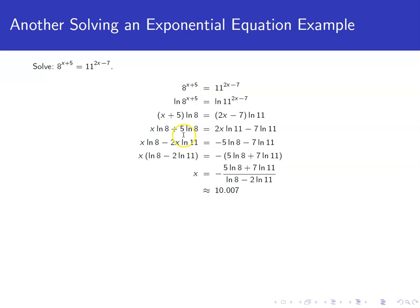On the right-hand side, we get 2x natural log of 11 minus 7 natural log of 11.